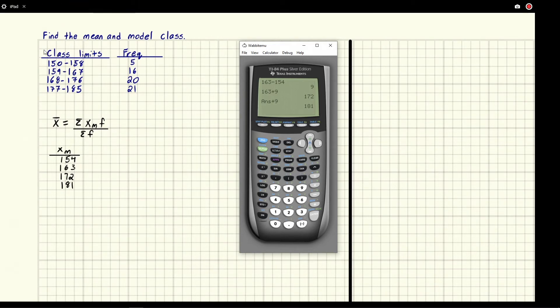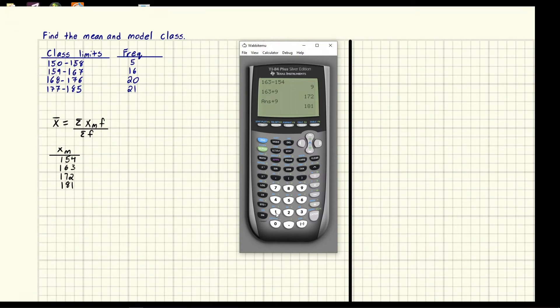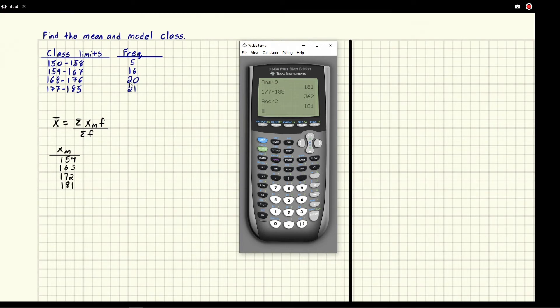That's a property when we have things like class limits they all need to be the same space apart. That's a safe assumption you can make for the problems that we're doing. So that these are going to be our midpoints and let me just verify this last one just to show you that indeed this is truly the case. 177 plus 185 and then we divide that by two we get 181. So just to put your mind at rest.